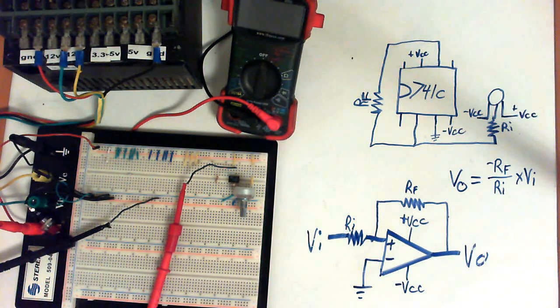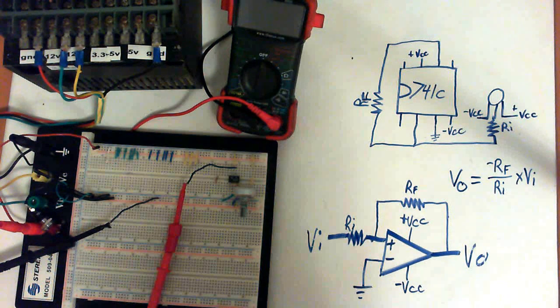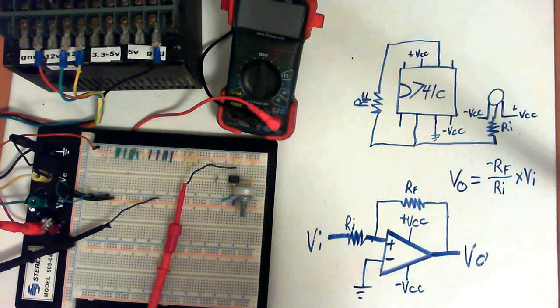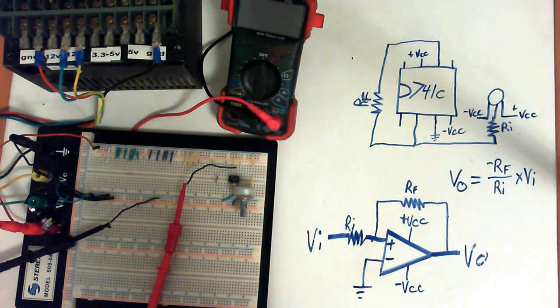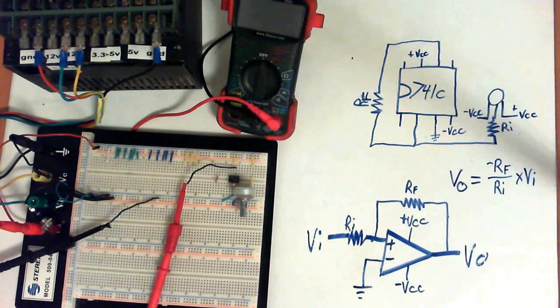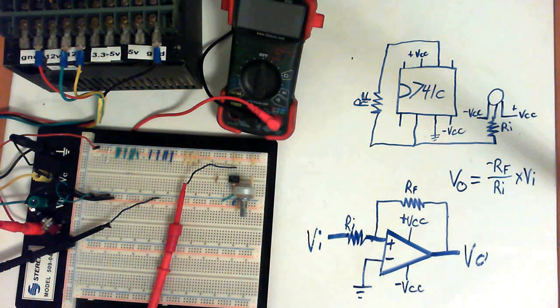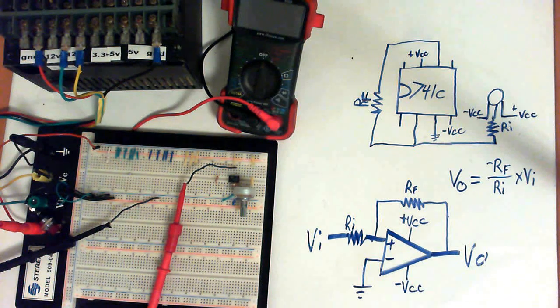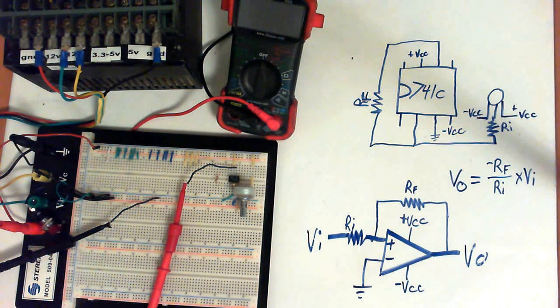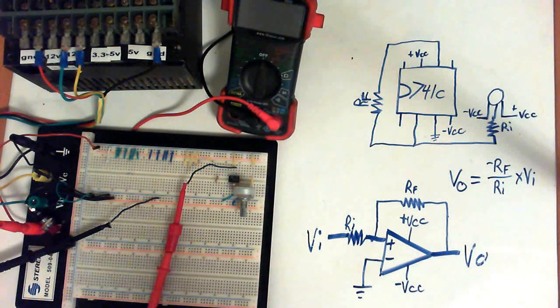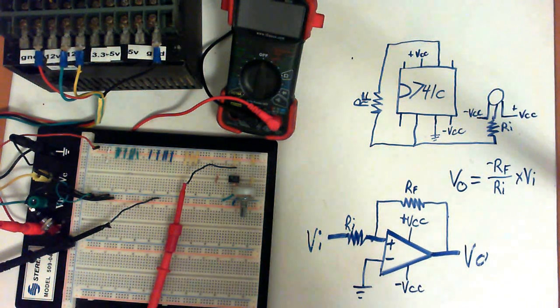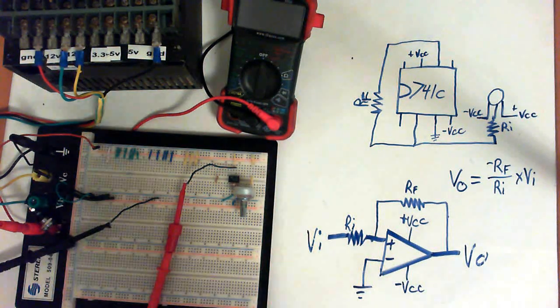What we're going to be covering today is the 741CN op amp, and we're going to be covering the inverting aspects of it. A lot of people know about op amps, but they really don't know how to use them. It's just a basic introduction to op amps. One of the problems I had when I was younger, messing around with these is I didn't know what the hell they did. I wanted to figure out how they worked, but there was just no really basic information out there. So this right here is going to give you the basics and it's a very minimal part list.